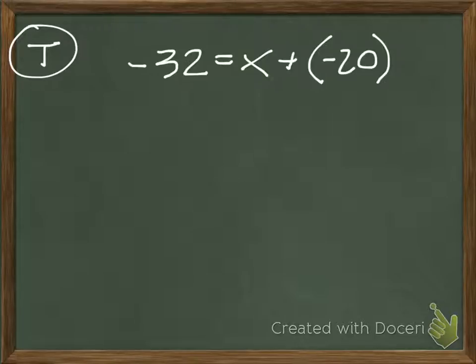And the variable, cliché-ly, is x. So in this case it is x, but sometimes the variable can be y or z or q, whatever it may be. In this case it's x. So we need to find the value of x that makes this equation true.